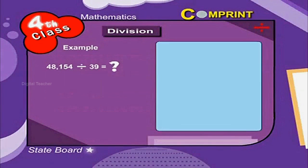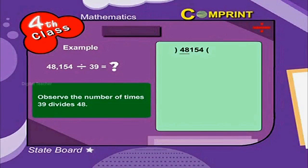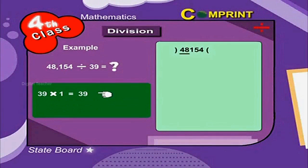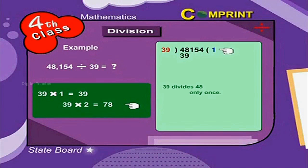Look at the example: 48,154 divided by 39. How much do we get? Here is the solution. Observe the number of times 39 divides 48. 39 into 1 is equal to 39, 39 into 2 is equal to 78. That is, 39 divides 48 only once.